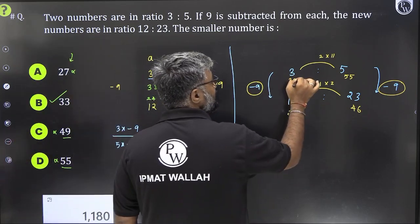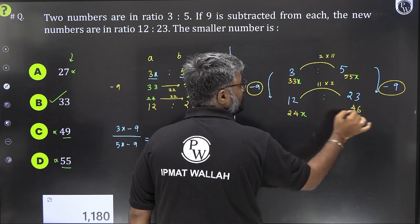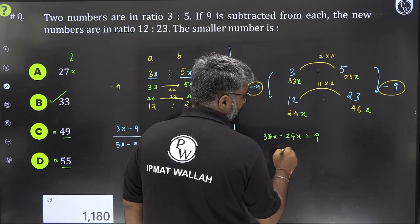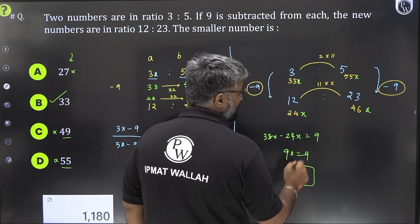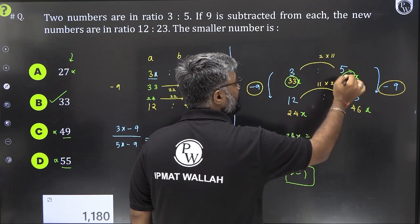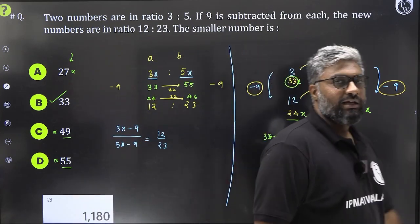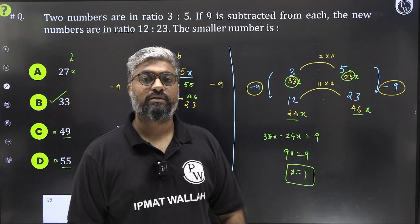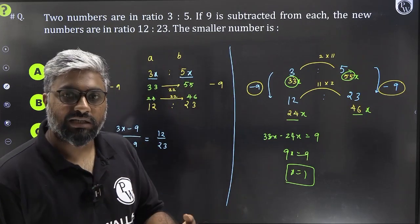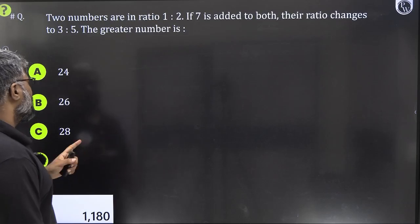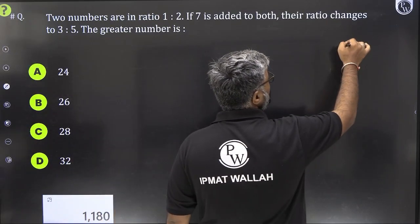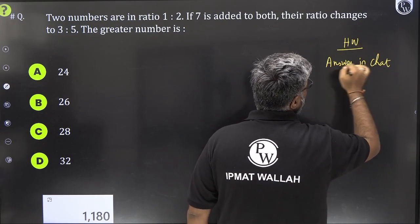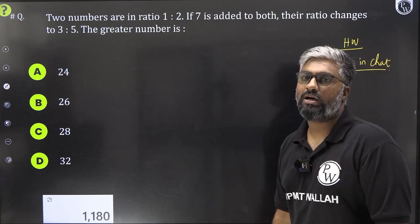Alternatively saab jaga pe aap same common multiple x laga sakte ho. So if 33x minus 24x is 9 then 9x is 9, x becomes equal to 1. That means 33 aapka smaller number 55 aapka bada number 9 subtract karne ke baad 24 and 46. This is very helpful when we go for questions, yahaan pe kuch subtract ya kuch add kiya gaya hai dono taraf. And also when you have situations, yahaan pe you have ages, partnership based questions. This you can try. This will be your homework question. Homework question. Iska jo answer hai, woh chat mein lagao. Answer in chat. Let's see how many of you can solve this aur kitne logon ka sahi answer aata hai.